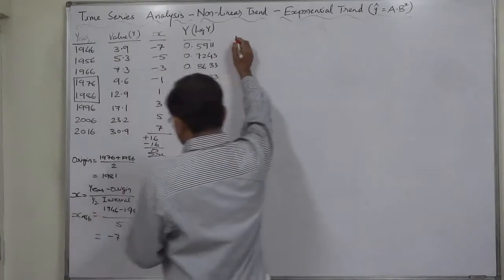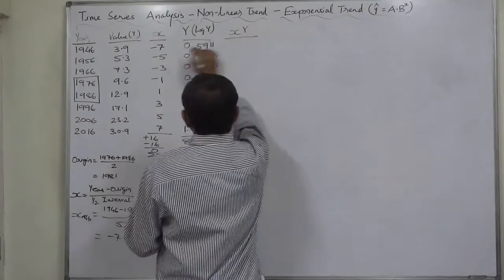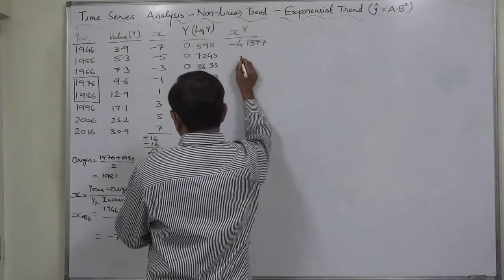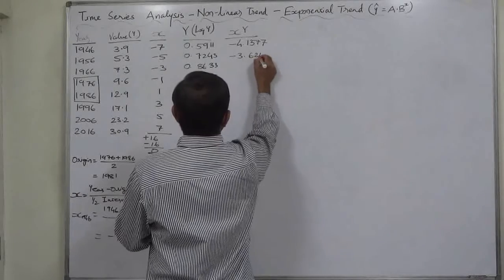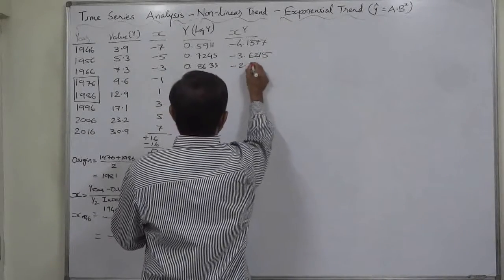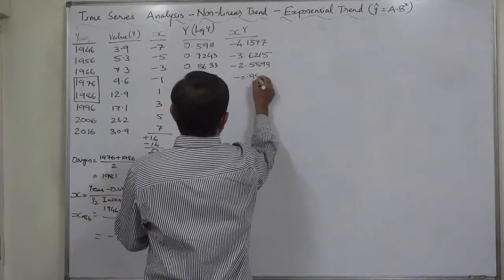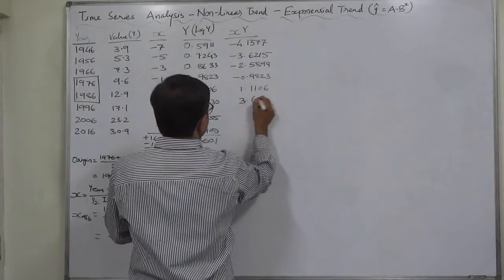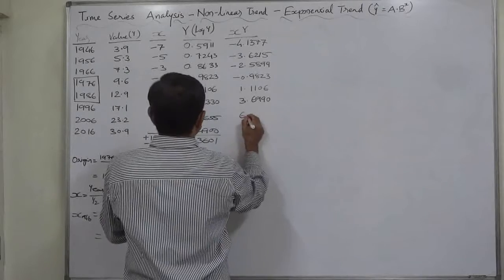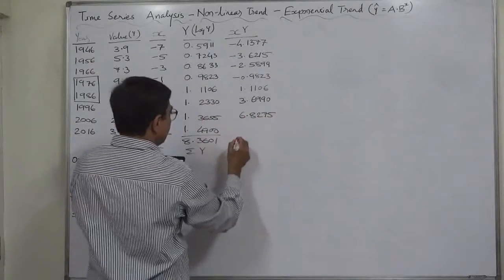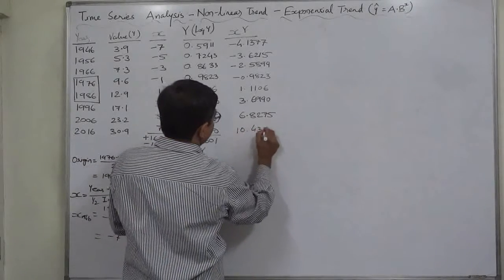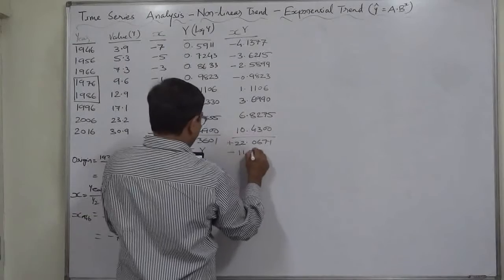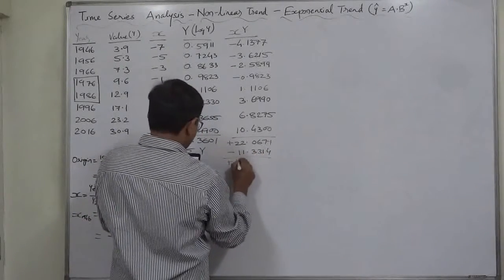Now we compute x multiplied by capital Y for each year. The products are: minus 4.1377, minus 3.6215, minus 2.5899, minus 0.9823, positive 1.1106, positive 3.6990, positive 6.8275, and positive 10.4300. The positive total comes to 22.0671, the negative total comes to 11.3314, and the net sigma x·Y is positive 10.7357.